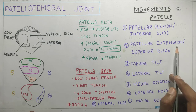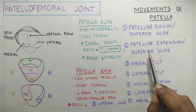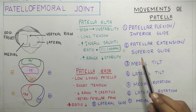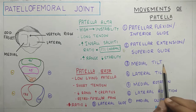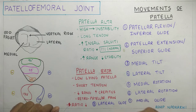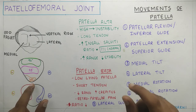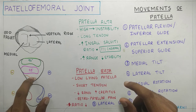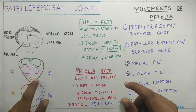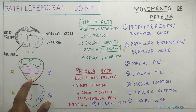The second movement is patellar extension. During patellar extension, the patella is placed superior to the femoral condyles and it is in a relatively unstable position. During 20 degrees of flexion, the patella makes contact with the femoral condyles only at a small area — the inferior pole of the patella makes contact with the femur.